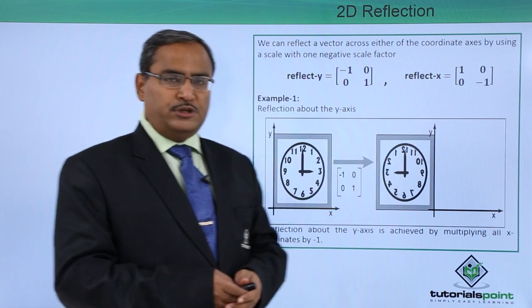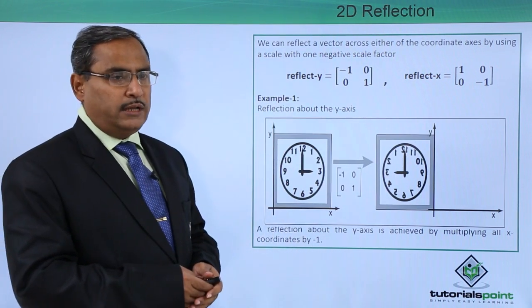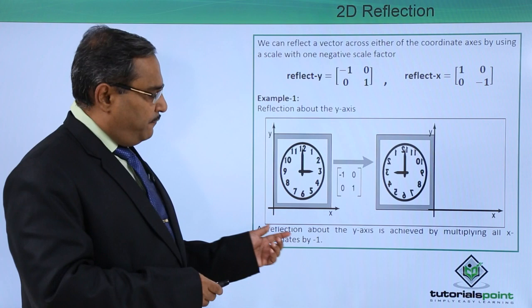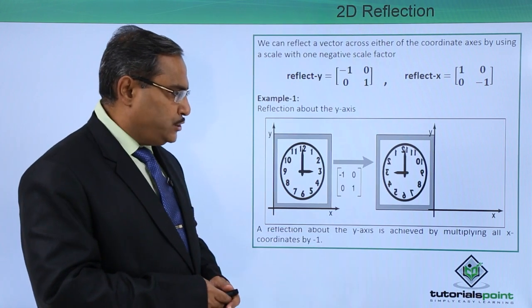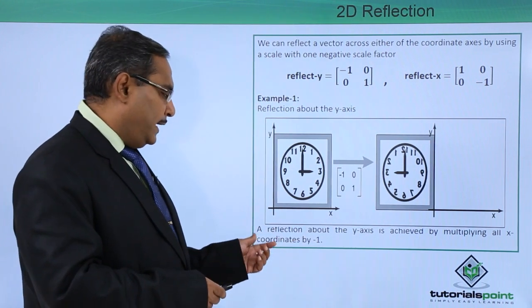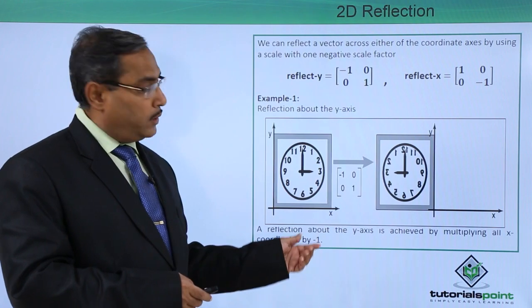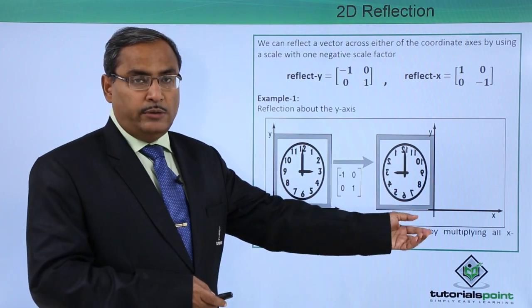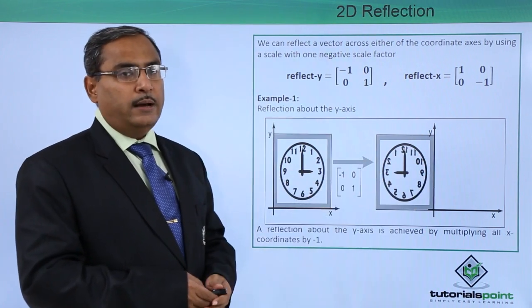Similarly, this is the transformation matrix for reflection along the x-axis. A reflection about the y-axis is achieved by multiplying all x coordinates by minus 1. As I told you earlier, the y will remain the same, only x will become negative.